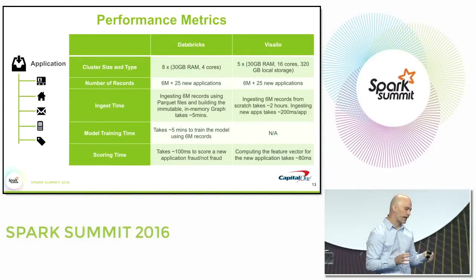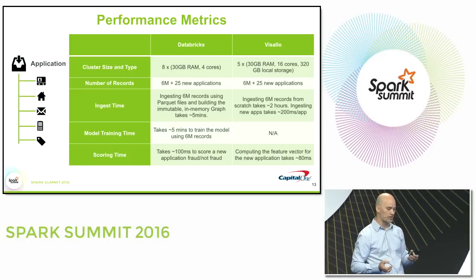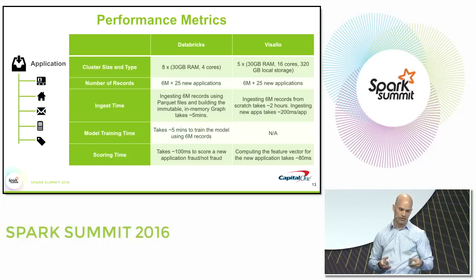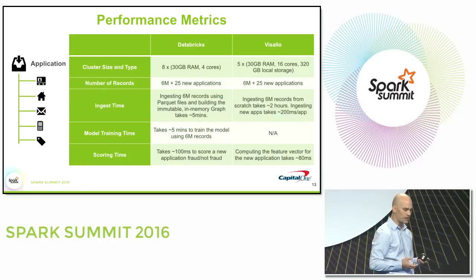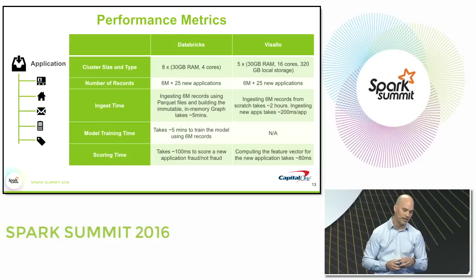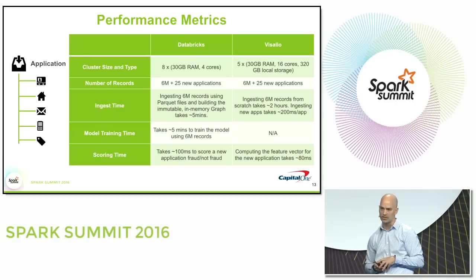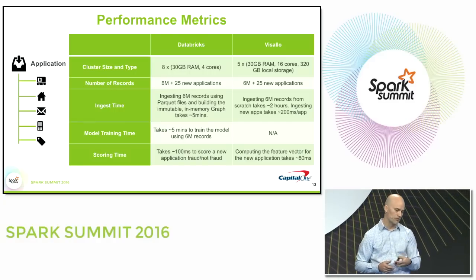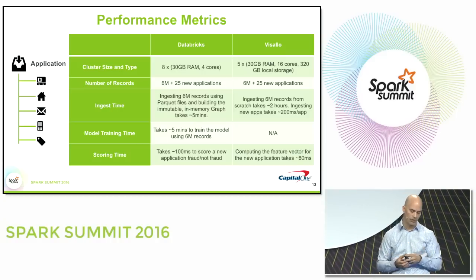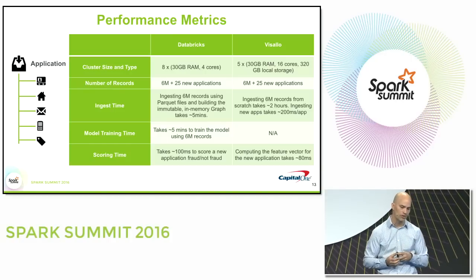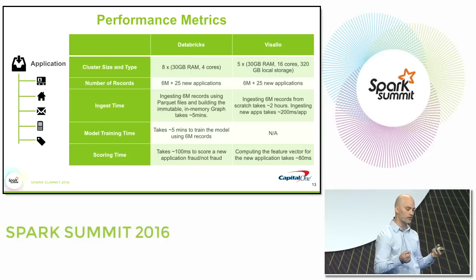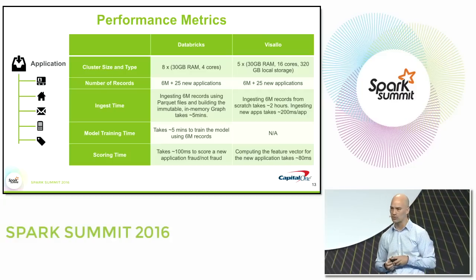Spark and the Databricks platform have made this computation very fast. Ingesting six million applications into Databricks took less than five minutes, model training took less than five minutes, and scoring a new application — determining its connectedness and potential fraud — took less than 100 milliseconds. With Vassalo using Accumulo on Hadoop and Elasticsearch, ingesting six million records took a couple of hours, but determining full connectedness of a new record against all six million existing applications takes about 200 milliseconds per app.